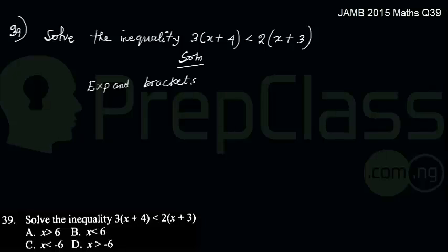We are following on question 39. Question 39, as you can see on the left hand side of the screen, is a question on inequalities. The question says solve the inequality 3(x + 4) < 2(x + 3).